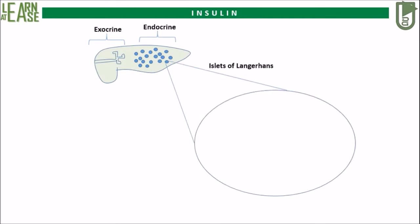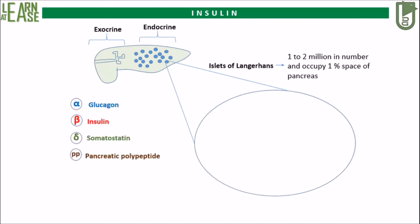Islets of Langerhans are 1 to 2 million in number and occupy 1% of the total space of the pancreas. They consist of 4 types of cells: alpha, beta, delta, and PP cells, which produce glucagon, insulin, somatostatin, and pancreatic polypeptide respectively.